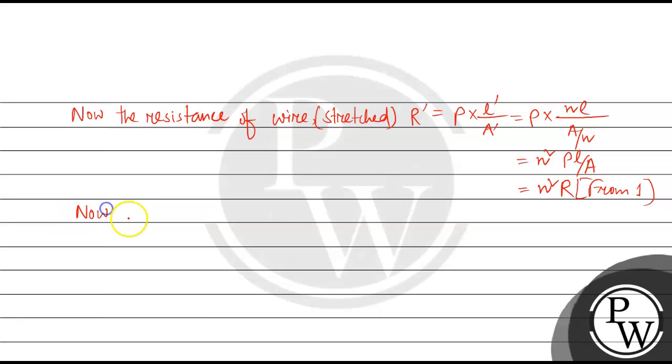Now the wire is cut into 5 pieces. So resistance of each wire, let's say I am considering this, that is R prime by 5. So it is N square R by 5.